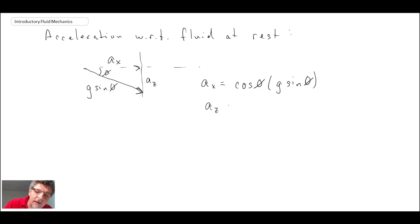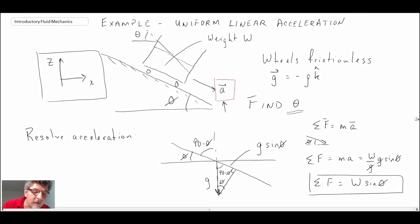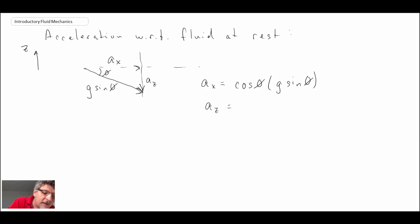And az is going to be, it's going in the negative direction. Remember our coordinate system: z was up and x was to the right. So x is positive, that makes sense. az is going to be negative and that's opposite over the hypotenuse, so that is sine phi multiplied by the hypotenuse, which is g sine phi.